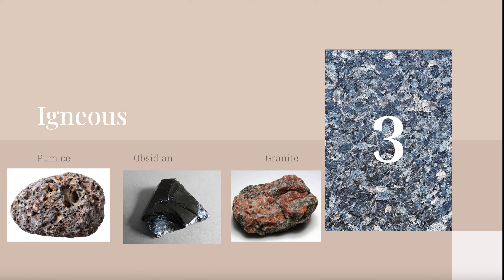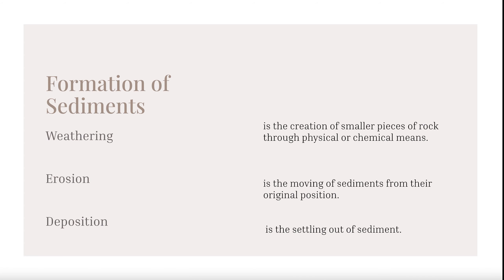To understand the rock cycle, we need to review the formation of sediments. On the top left-hand side of your notes, the first blank says something 'is the creation of smaller pieces of rock through physical or chemical means.' We know that is weathering, so in that first blank write weathering.